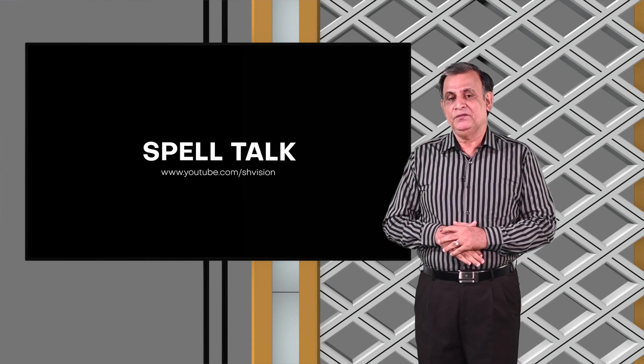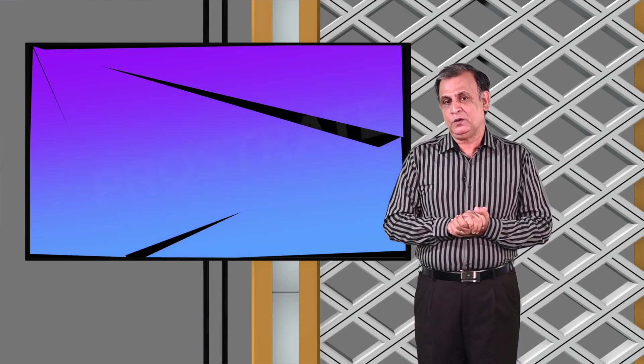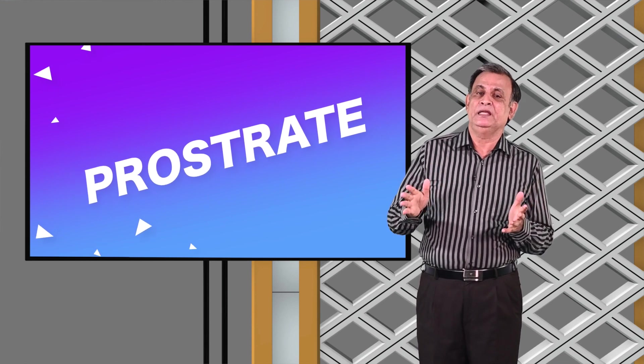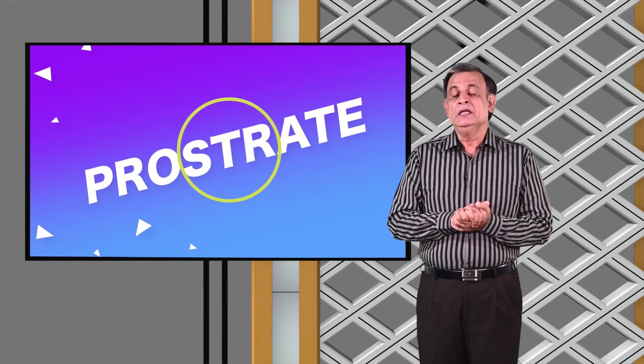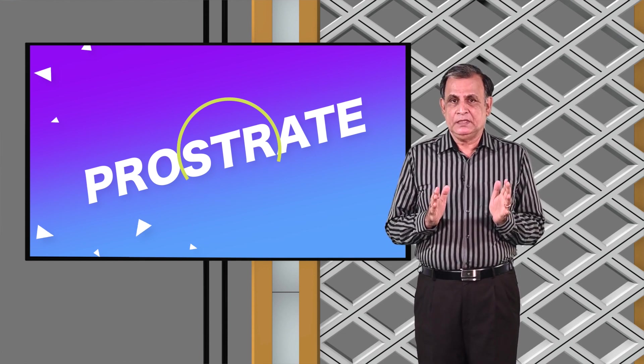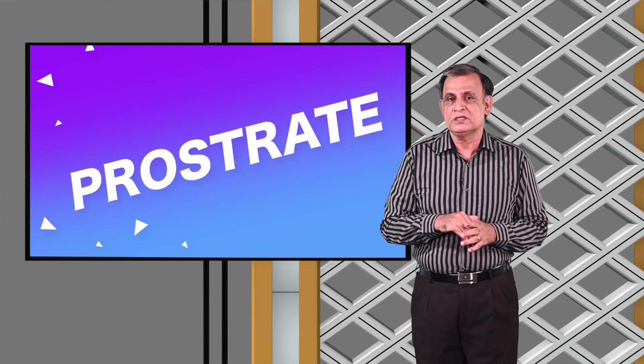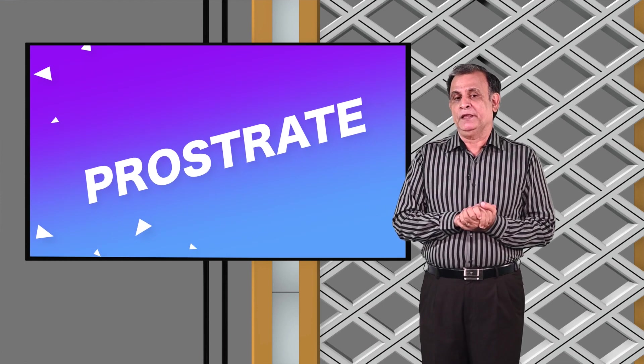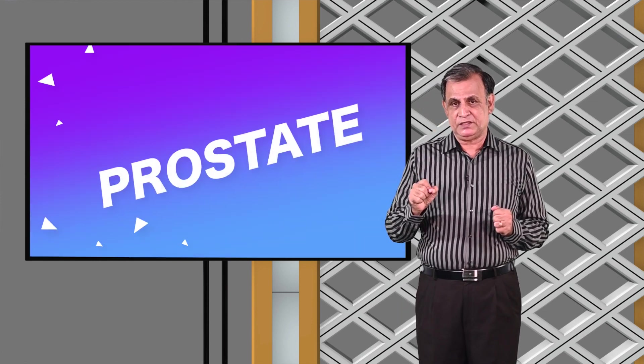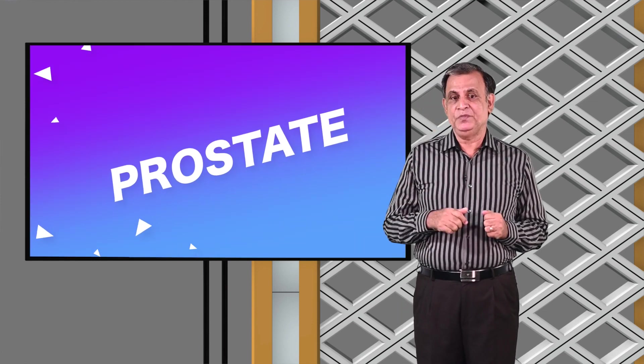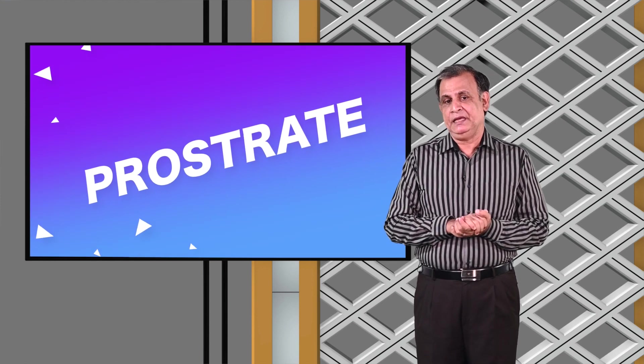And then we have prostrate. The spelling is P-R-O-S-T-R-A-T-E. The tricky area is the S-T-R. Prostrate means lying with your face turned downwards in submission. Prostate is P-R-O-S-T-A-T-E, and prostrate P-R-O-S-T-R-A-T-E.